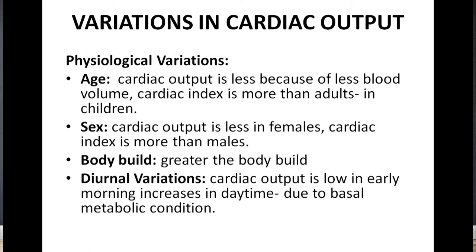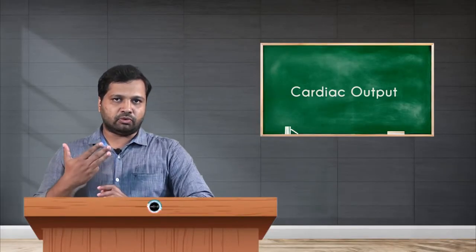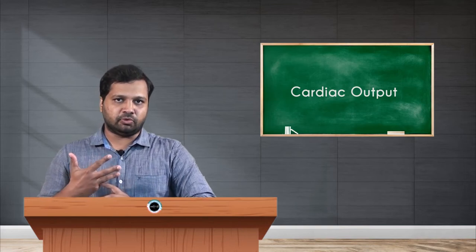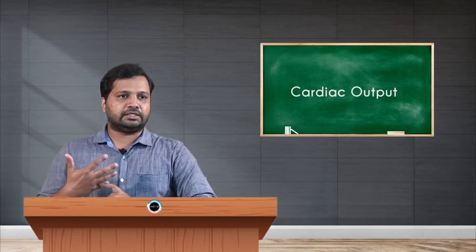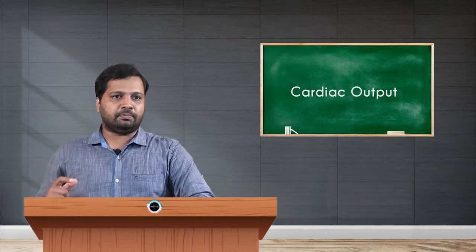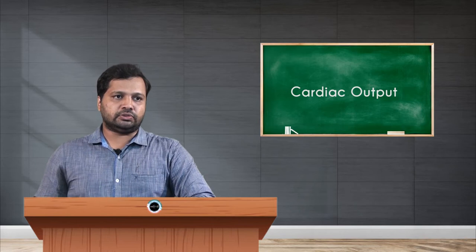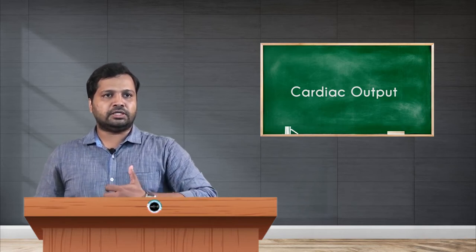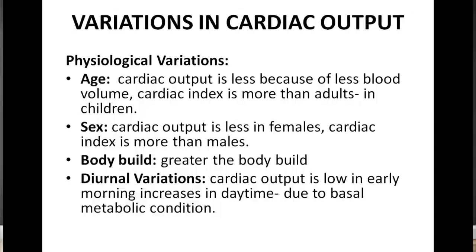The third factor is body build. If a person's body build is large or obese, the cardiac output is high. If the person is lean, cardiac output is less. Because of this, obese individuals are more prone to hypertension, whereas lean individuals are less likely to develop hypertension.